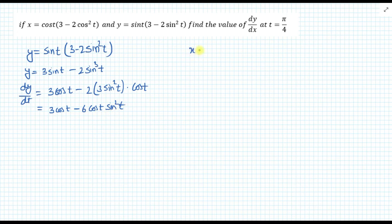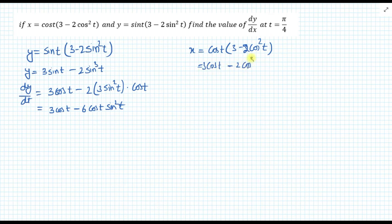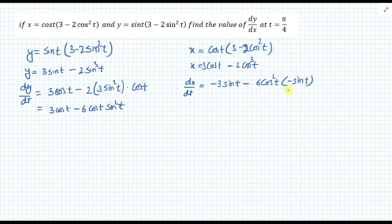From the x side, x is cos(t) times (3 minus 2 cos squared t), which can be written as 3 cos(t) minus 2 cos cubed t. Differentiating both sides with respect to t: dx/dt equals minus 3 sin(t) plus 6 sin(t) cos squared t.